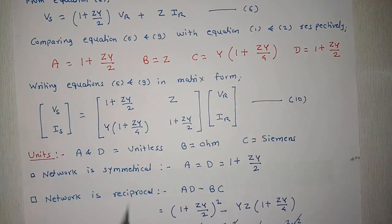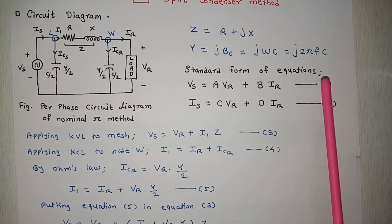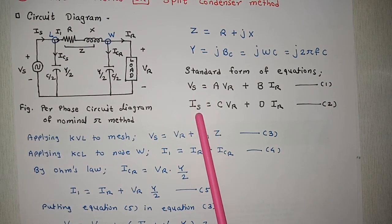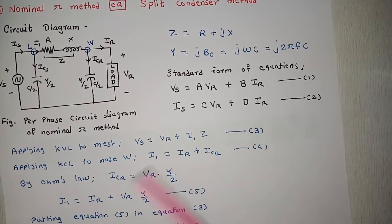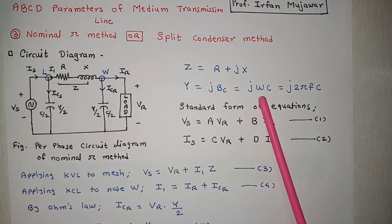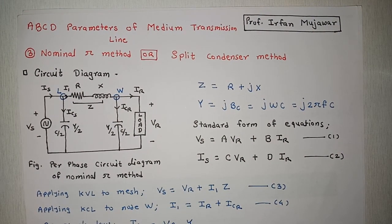These are the ABCD parameters of the nominal pi method. Once the ABCD parameters are determined, we can substitute these values into equations 1 and 2 to determine sending-end voltage, sending-end current, sending-end power factor, voltage regulation, as well as transmission efficiency. I hope you understood how to determine the ABCD parameters of a medium transmission line using the nominal pi method. Thank you. If you have not subscribed to the channel, please subscribe for all the latest updates.